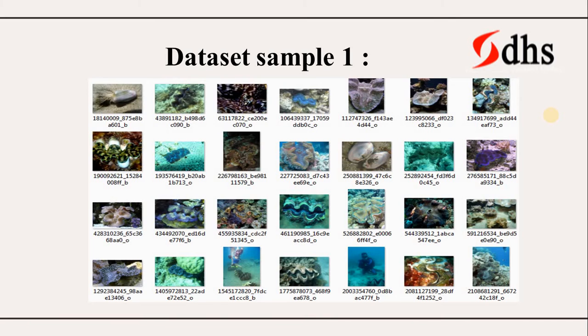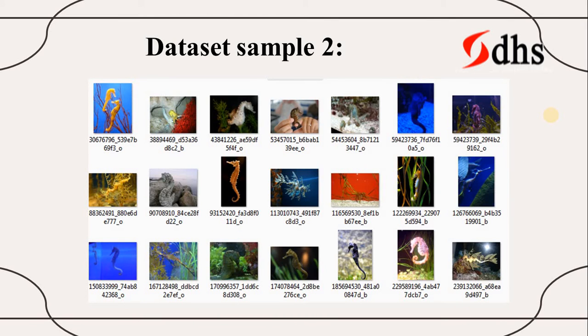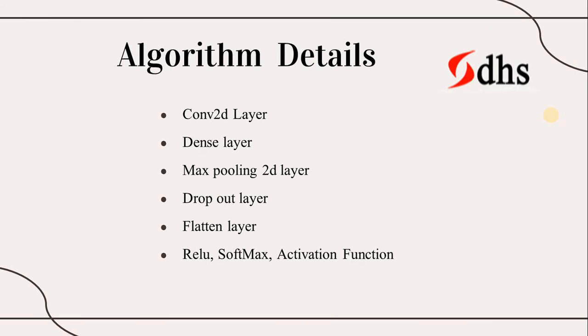From one target I have shown some samples, and from another target as well, so you can clearly see all the sea creatures. For the algorithms, we work with the image dataset using CNN-based algorithms. We use one algorithm and can compare with additional CNN-based algorithms and finally propose the best one. The general layers used are: convolutional layer, dense layer, max pooling layer, dropout layer, flatten, and well-known activation functions.